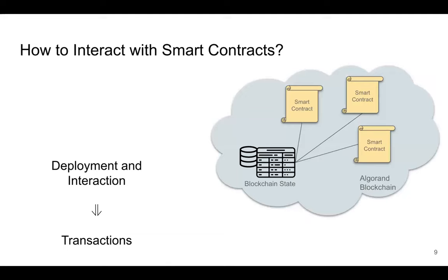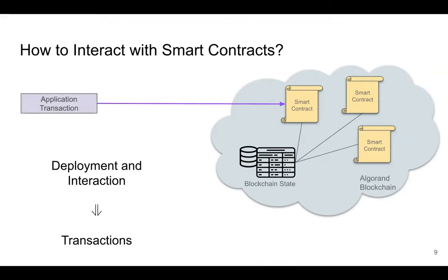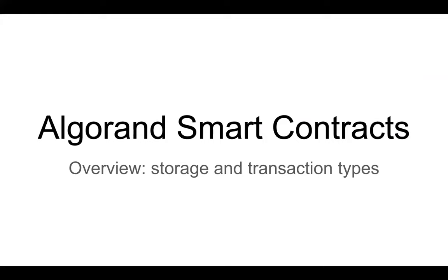Let's see how we can interact with a smart contract. Suppose I've written a smart contract — how do I do anything with it? I need to deploy it to the blockchain and interact with it. Remember that everything on the blockchain is a transaction. The same way you send bitcoin by making a transaction, to interact with or deploy a smart contract you also make a transaction. That's the case for all blockchains.